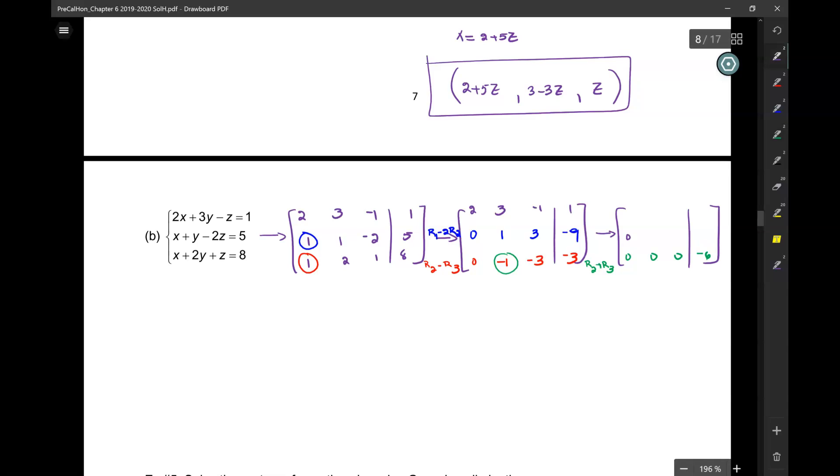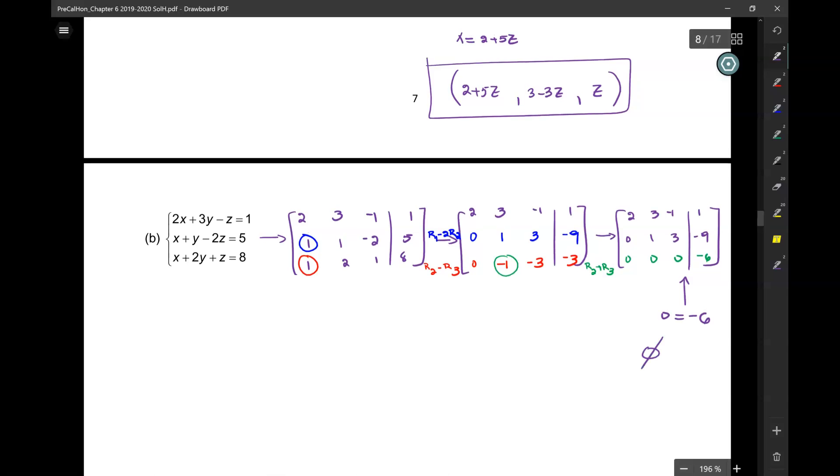Because, okay, on top I have 0, 1, 3, negative 9. 2, 3, negative 1, 1. But what do I get here? I get that 0 equals negative 6. And when is 0 equal to negative 6? Never. So this is no solution.